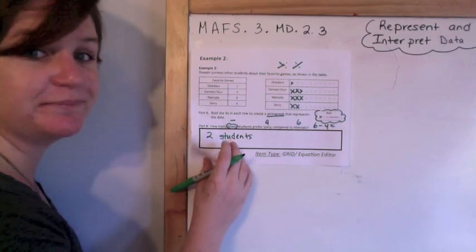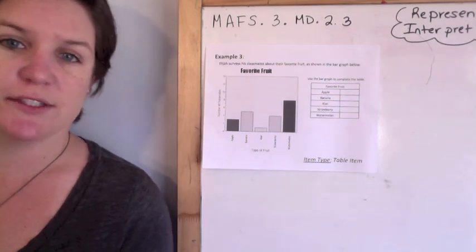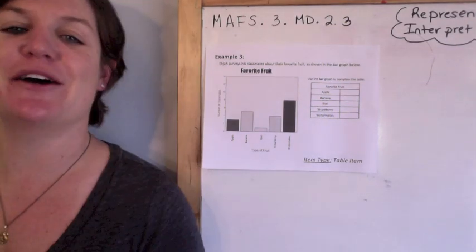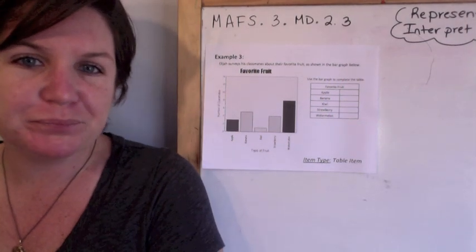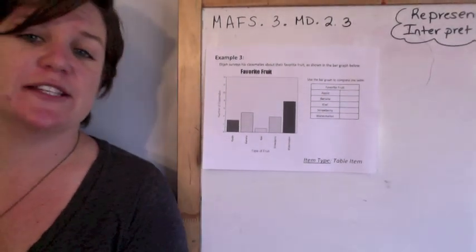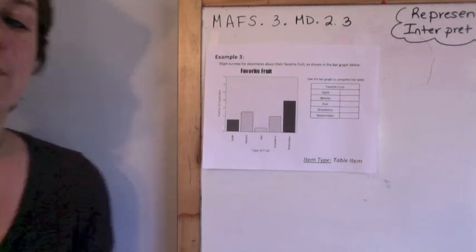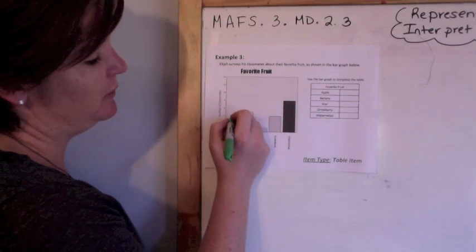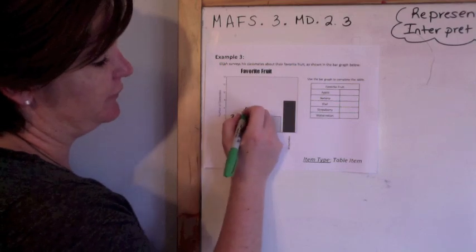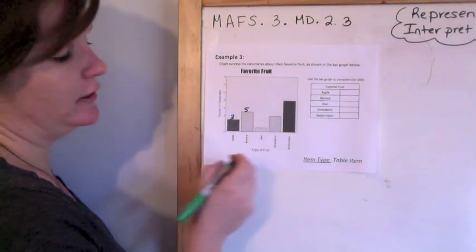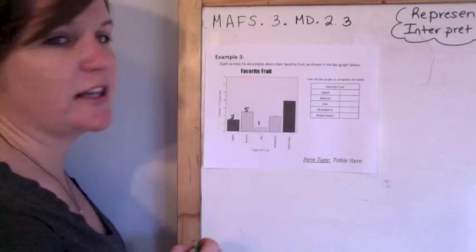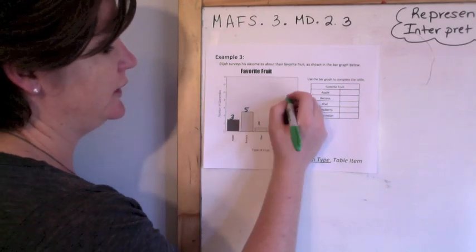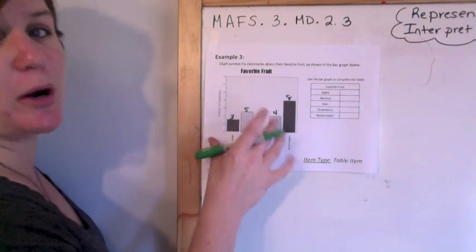Example three: Elijah surveys his classmates about their favorite fruit as shown in the bar graph below. So here's their favorite fruit. We've got in between two and four, which is three people like apples. We've got five people who like bananas because it's in between four and six. We have one person who likes kiwi. Four people like strawberries, and eight students like watermelon. So I'm going to use this bar graph to complete this table over here.